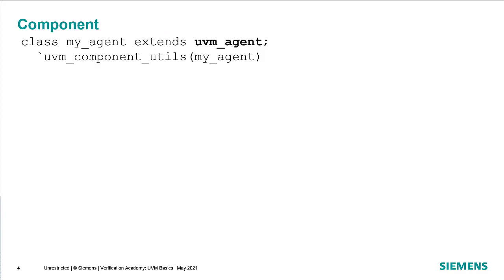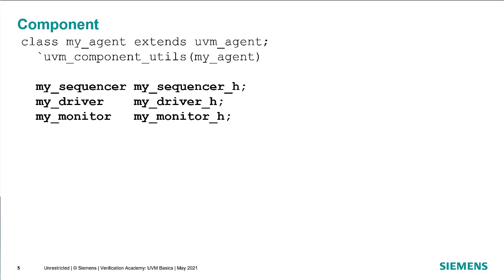We create a component extended from UVM agent — we'll call it my agent. Similar to what we showed in the previous session, we use the UVM component utils macro to register the my agent type with the UVM infrastructure. Then we have to declare the pointers to the sub-components — in this case a sequencer, a driver, and a monitor. We use the underscore h handle notation for instances of these particular types.